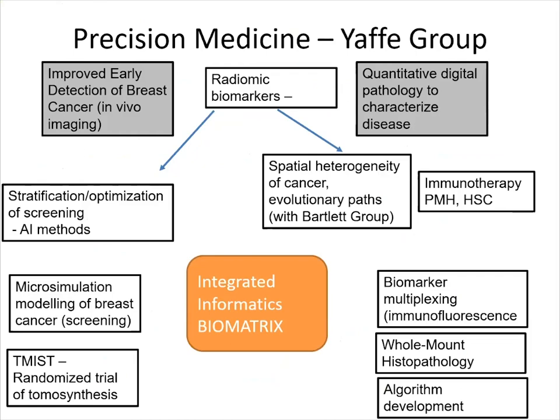I'm going to tell you how we're using the Biomatrix rather than discussing my group's research specifically. The Biomatrix is a data warehouse — an integrated informatics warehouse — and we use it to bring data from a variety of different sources together to facilitate our research. Two broad areas my lab is interested in are improving early detection of breast cancer through better in vivo imaging, optimizing existing approaches and developing new ones, and ex vivo approaches to quantitative digital pathology to better characterize disease and avoid over- or under-treatment of cancer.